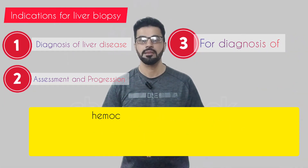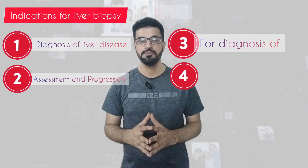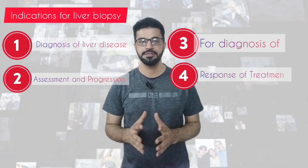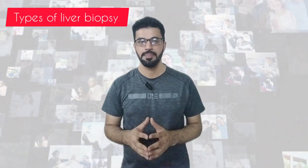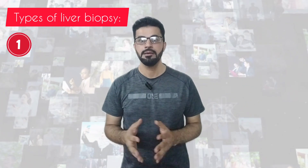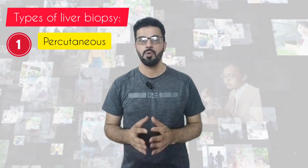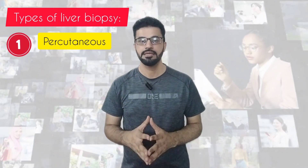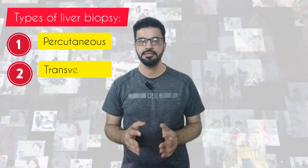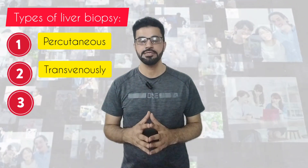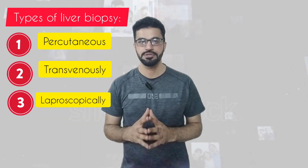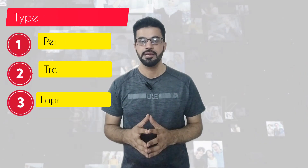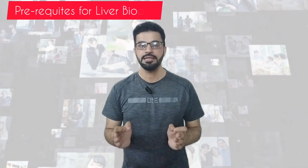Number four, to see the response of treatment. Types of liver biopsy: number one, percutaneous — needle through the skin; number two, transvenously — through the blood vessel; number three, laparoscopically — during abdominal surgery.